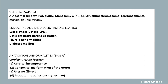Endocrine and metabolic factors include luteal phase defect, deficient progesterone secretion, thyroid abnormalities, and diabetes mellitus. Anatomical abnormalities include cervical and uterine factors such as cervical incompetence, congenital malformation of the uterus, uterine fibroid, and intrauterine adhesions.